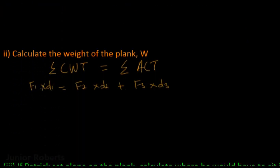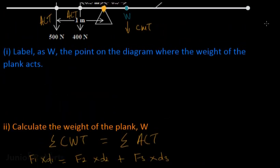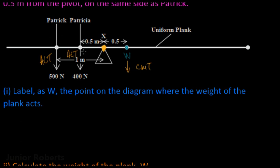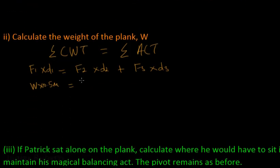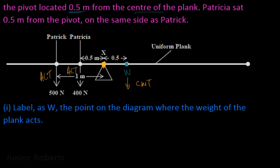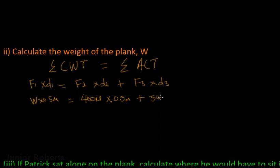Filling in values: the force causing the clockwise turning effect is the weight of the ruler W, acting 0.5 meters from the pivot. So W × 0.5 m = (Patricia's weight) 400 N × 0.5 m + (Patrick's weight) 500 N × 1 m.